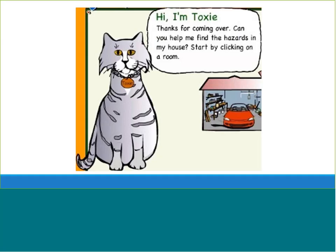ToxMystery the cat helps the children find the hazards hidden in each room and offers hints when needed. When all the risky spots in the house have been discovered, ToxMystery does a little dance and celebrates with them. There are fun sound effects from the doorbell ringing at the beginning when they enter the house, to the sound of different items falling over in each of the rooms. ToxMystery provides verbal and written instructions as students go through the game.